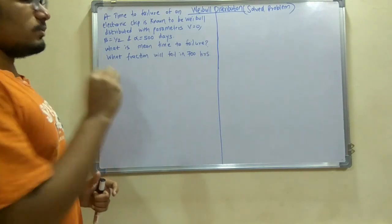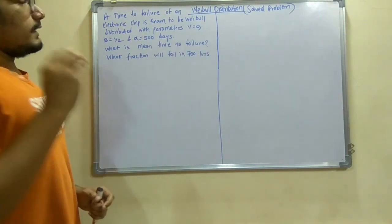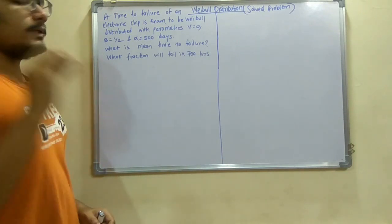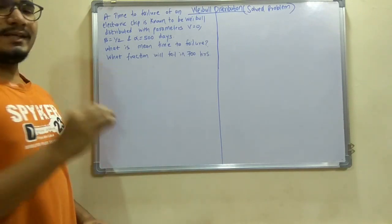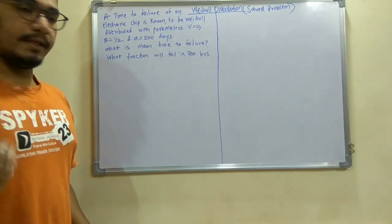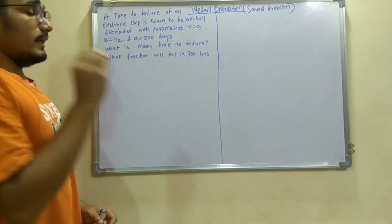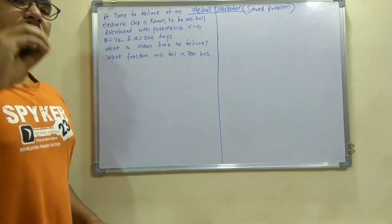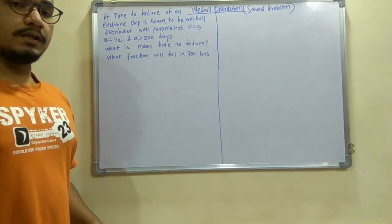Now there is a simple problem which goes like this: a time to failure of an electronic chip is known to be Weibull distributed with parameters v equals 0, beta equals half, and alpha equals 500 days. Now it is asking what is the mean time to failure and what fraction of them will fail in 700 hours.